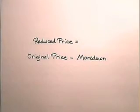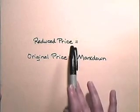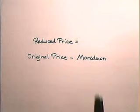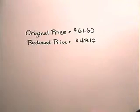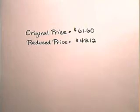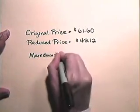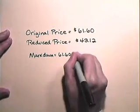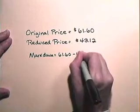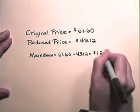Now let's define the terms involved in markdown and do an exercise using markdown. The markdown is the difference between the original selling price and the reduced selling price. So the reduced price equals the original price minus markdown. If we have an item for which the original price is $61.60 and the reduced price is $43.12, then the markdown will be the difference between the original price and the reduced price, which is $18.48.